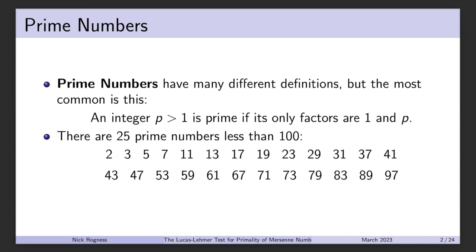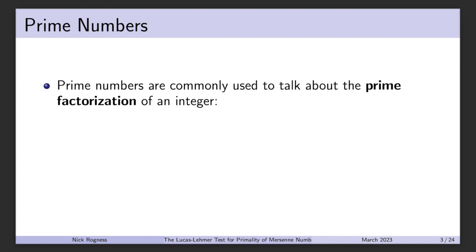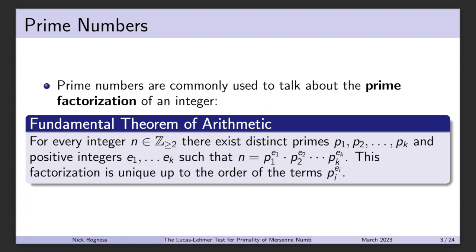Prime numbers are most commonly used to talk about the prime factorization of an integer. This is the fundamental theorem of arithmetic, which says that for every integer greater than 2, you can find distinct primes p1 through pk and positive integers e1 through ek such that n equals the product of each prime with its corresponding exponent. This factorization is unique up to the order of the terms, because multiplication is commutative.